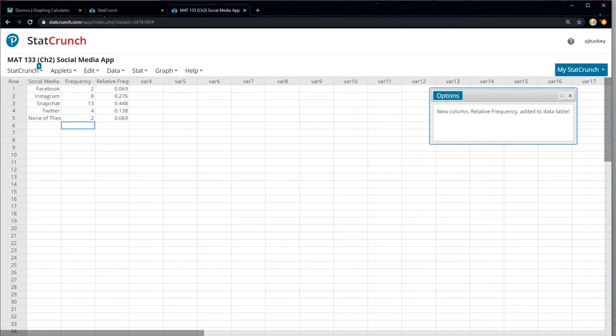And there you go, it just makes it automatically for you. So it's a little bit more work on the front end but it finds all the answers which is really nice. So I'm going to write these down and then I'll go back to my paper: 0.069, 0.276, 0.448, 0.138, and of course 0.069 at the end there.